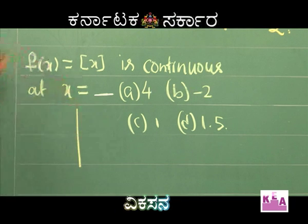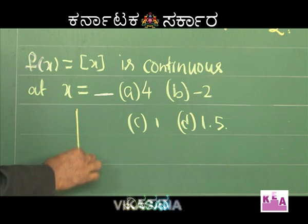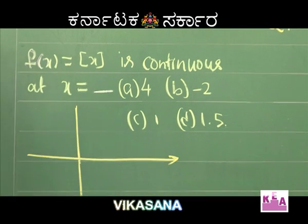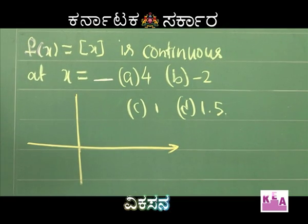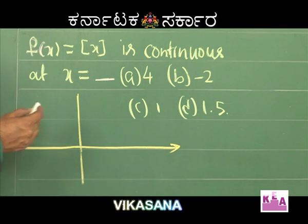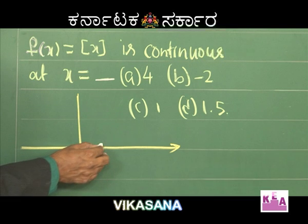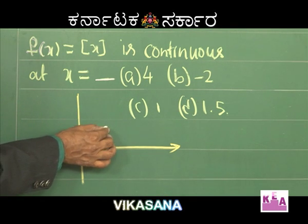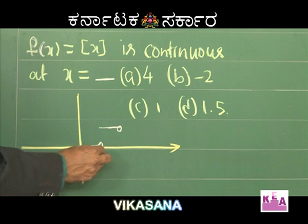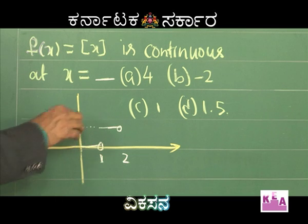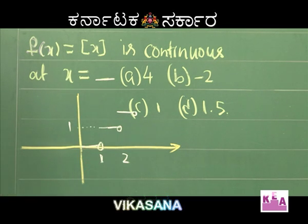The graph of the greatest integer function is like this: between 0 and 1, the integral part of x is 0 — including 0, excluding 1. Between 1 and 2, the integral part of x is 1. Between 2 and 3 it is 2.